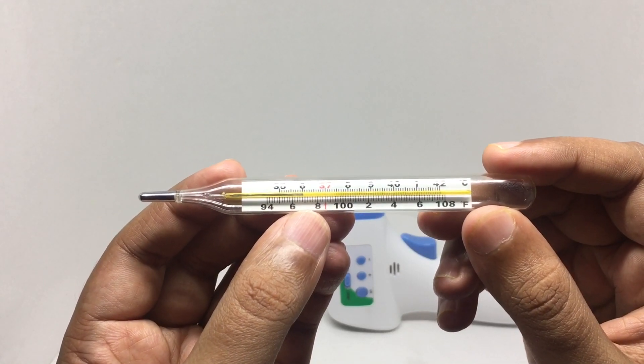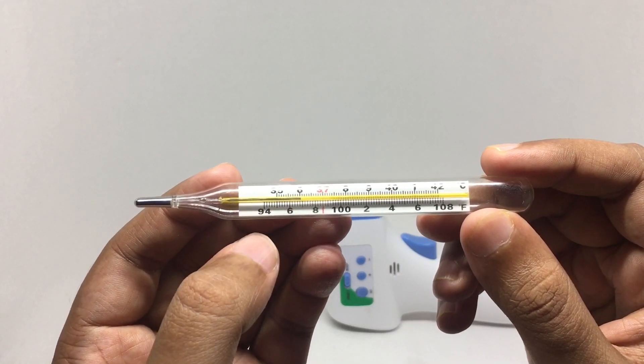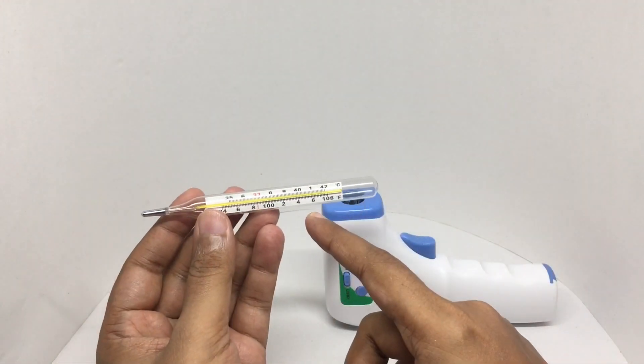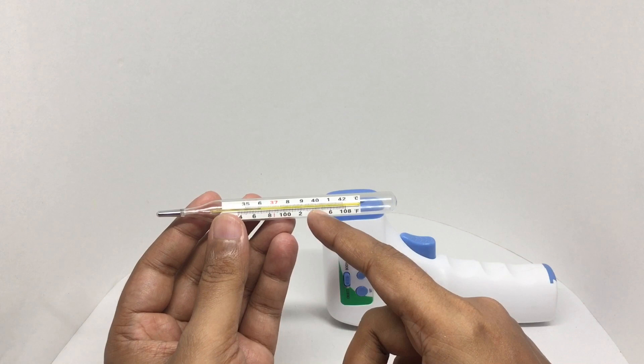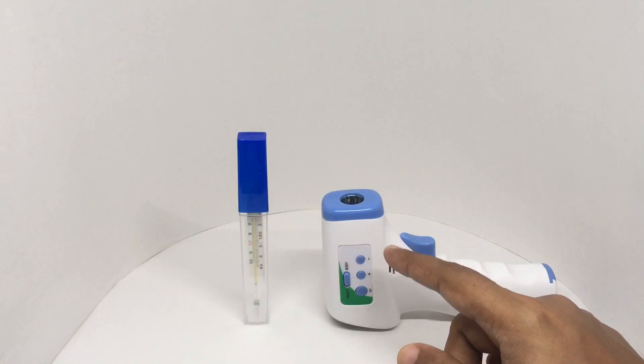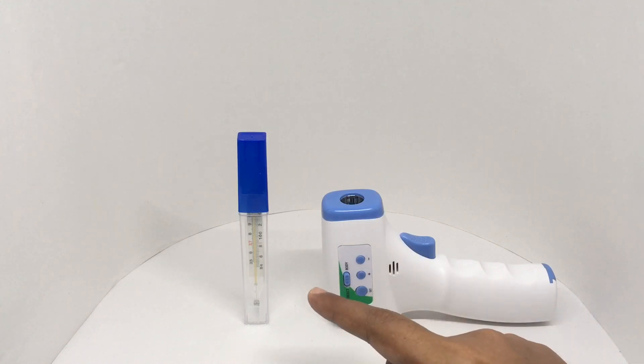This is much more accurate - the measurement says 97. This one is much more accurate but takes longer. This is pretty accurate too and gives you measurement really quickly. With this you have to clean it again to use it, and there is always the worry about infection.